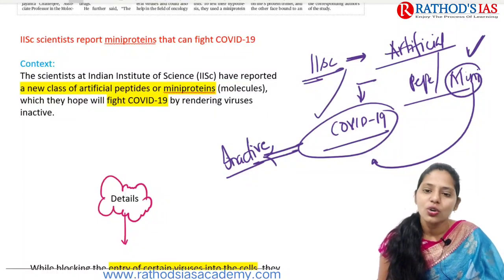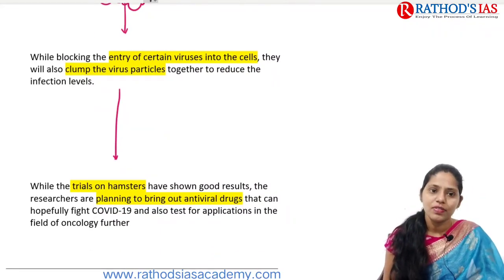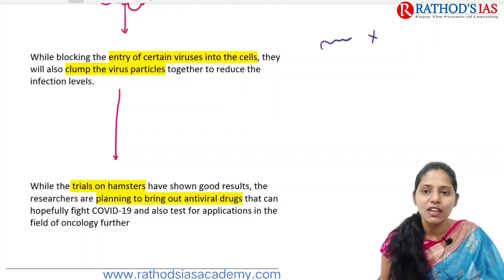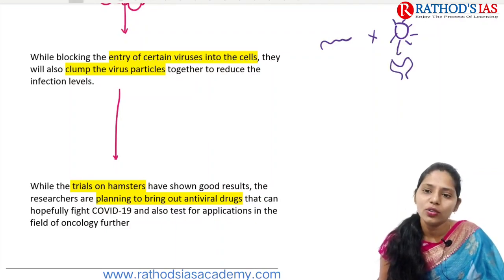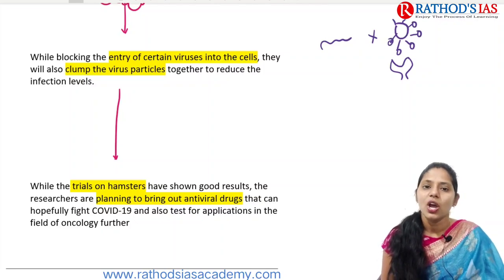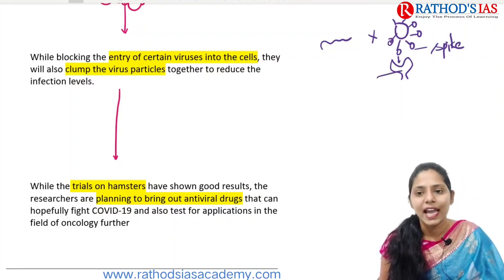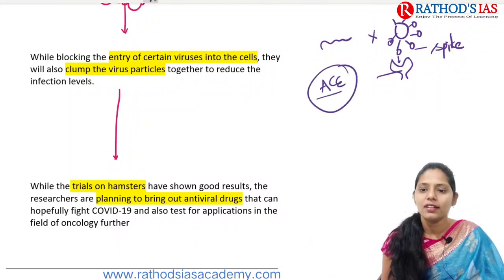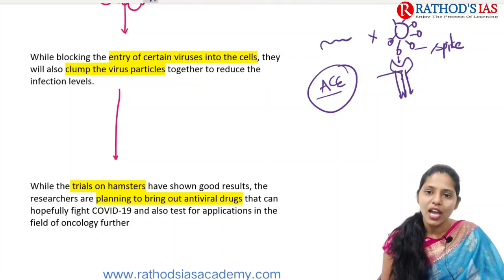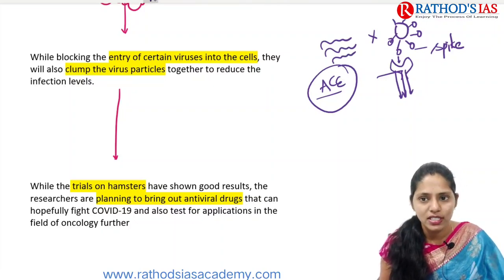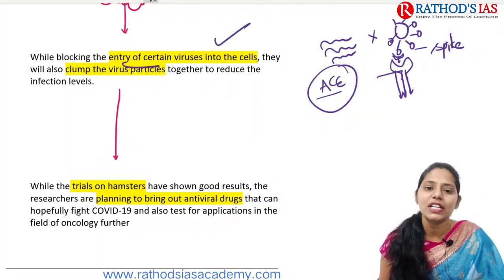These mini proteins will mainly block the COVID-19 virus from entering into the cell. As you all know, COVID-19 has surface proteins, for example spike proteins. These spike proteins attach to the ACE receptor, which is the entry door for the virus to enter our cell. When we use mini proteins, they block this entry pathway.